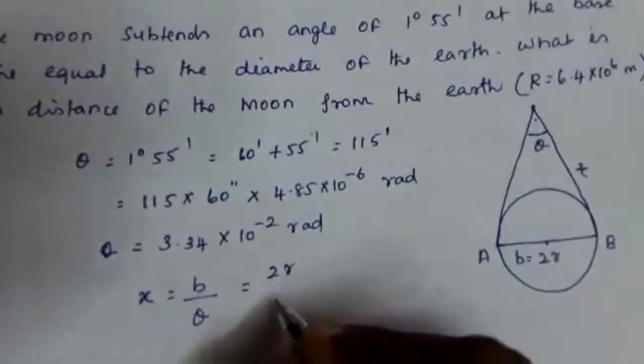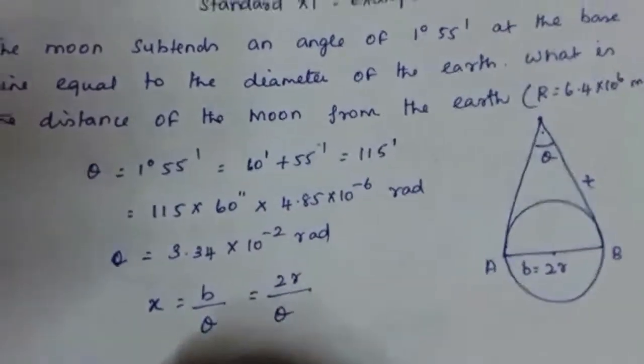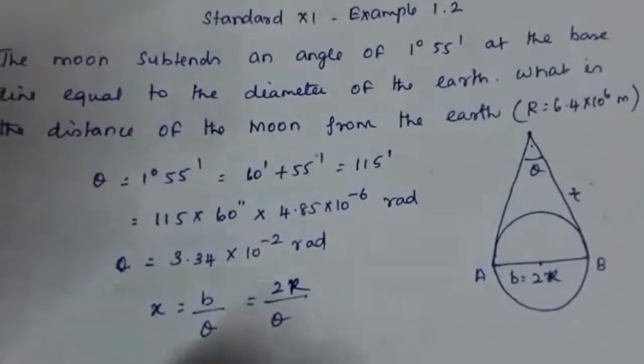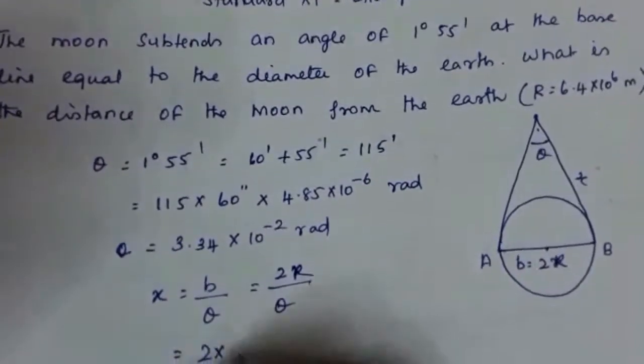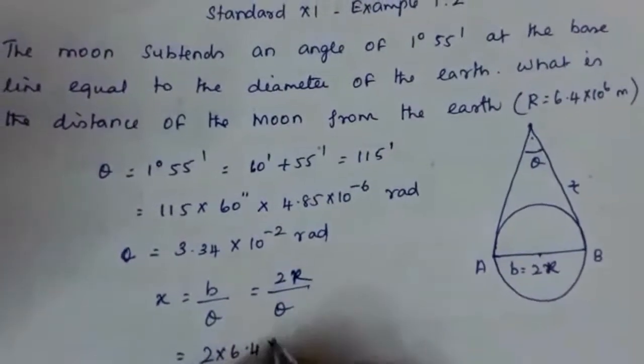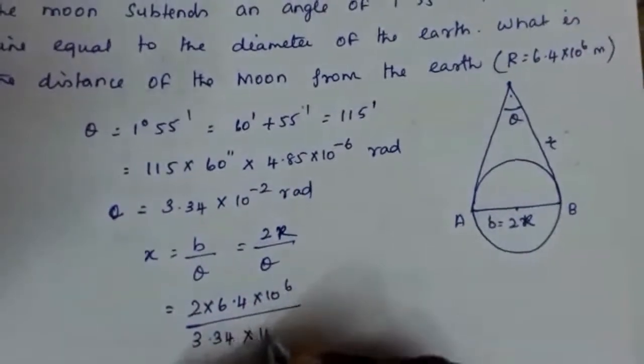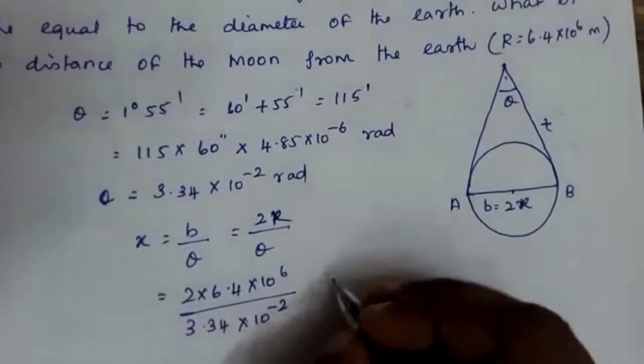So this is 2r by theta. Therefore, we can write that is 2 capital R. So here it is 2 into 6.4 into 10 raised to 6 divided by 3.34 into 10 raised to minus 2.